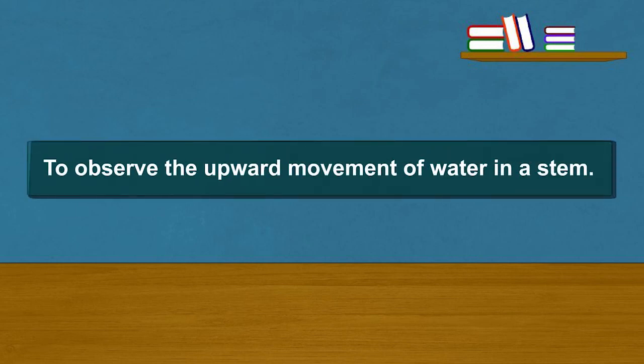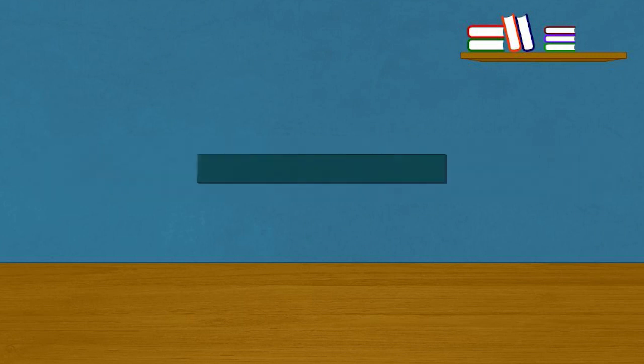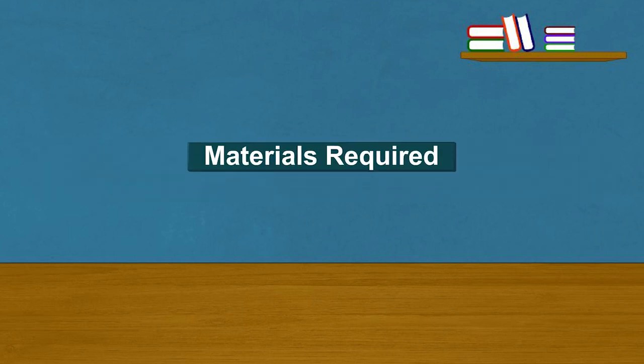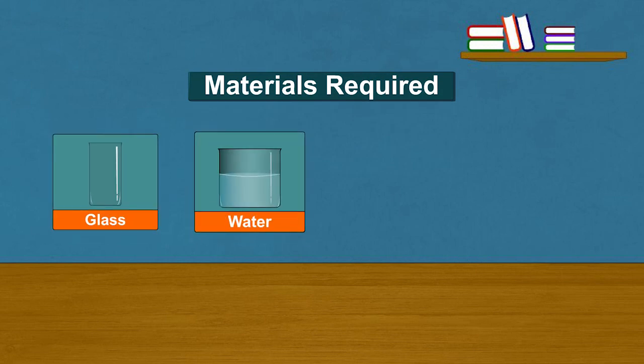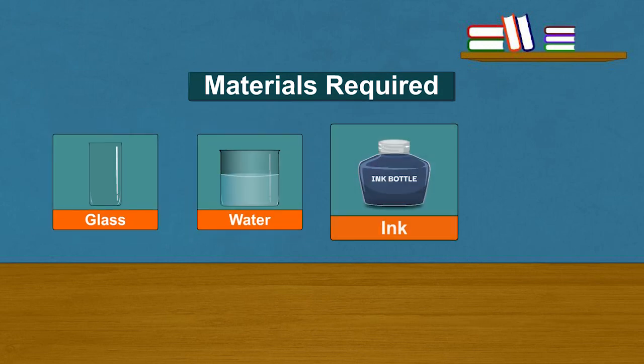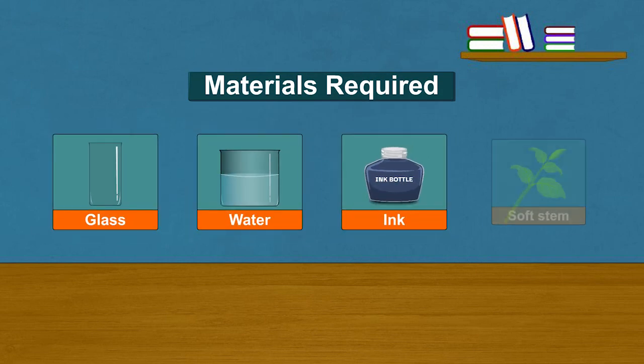Activity: To observe the upward movement of water in a stem. Materials required: glass, water, red or blue ink, and a soft stem.